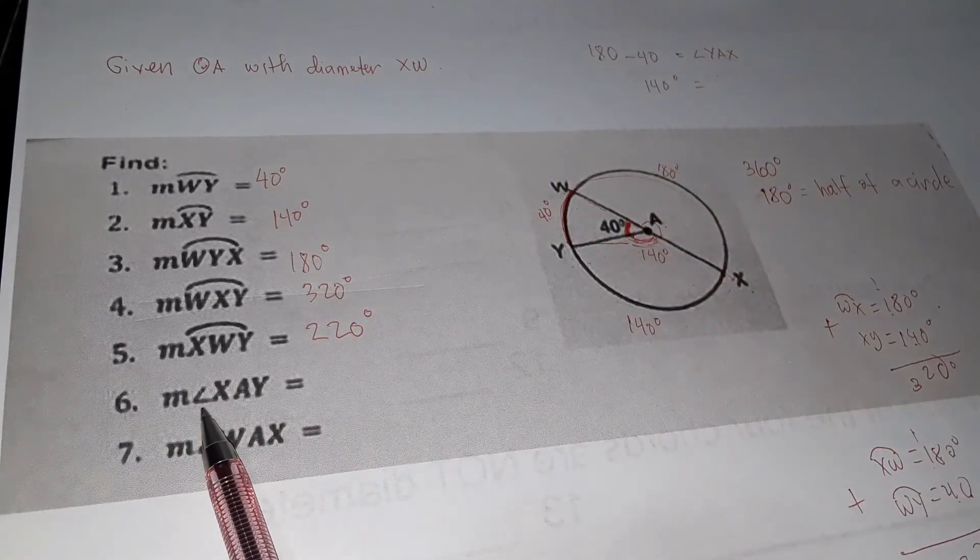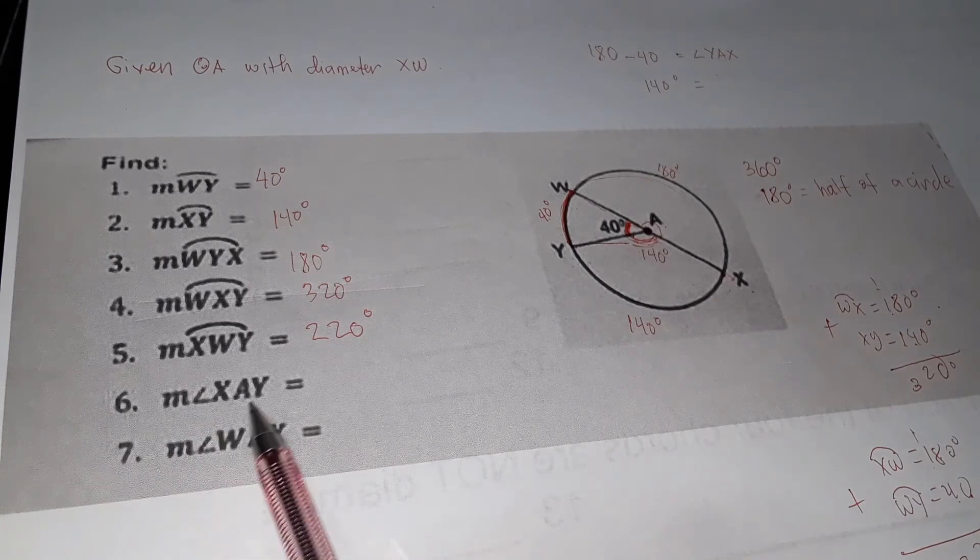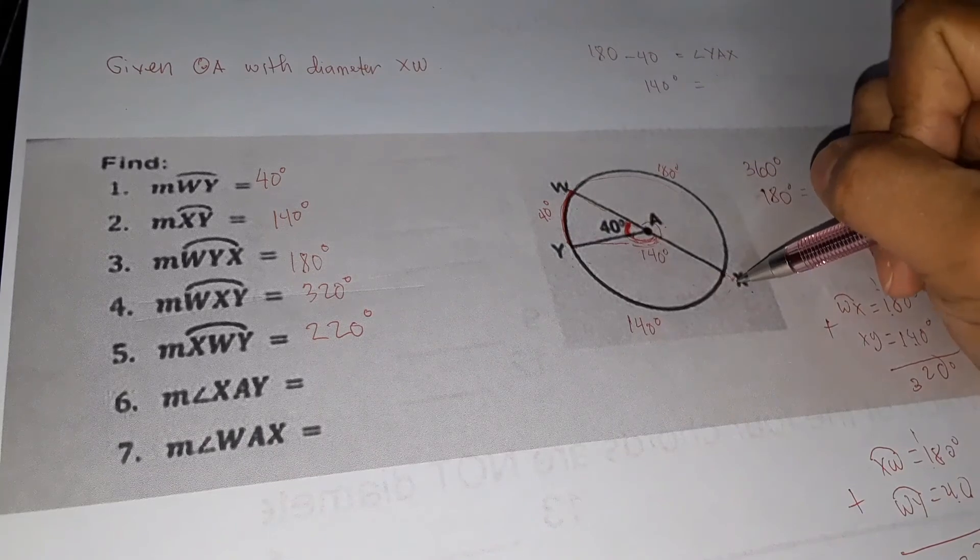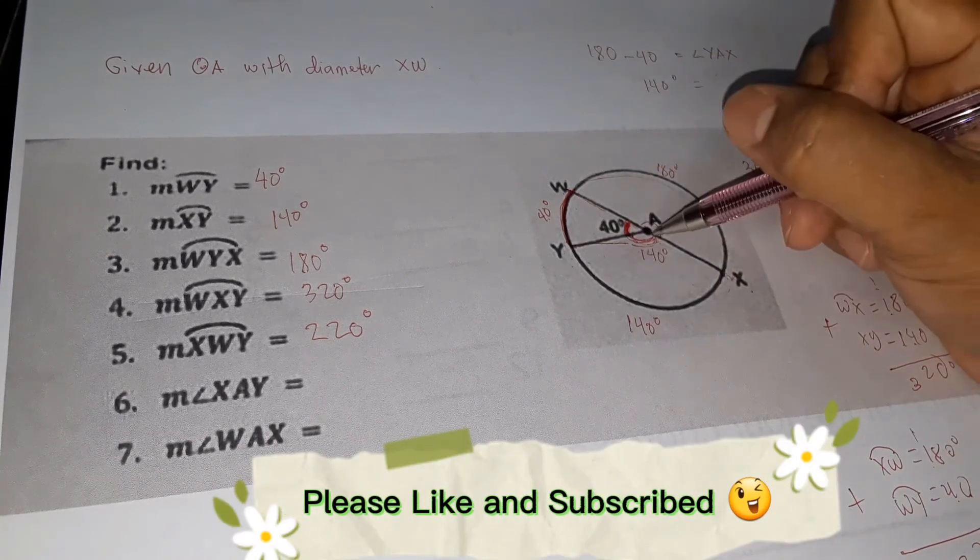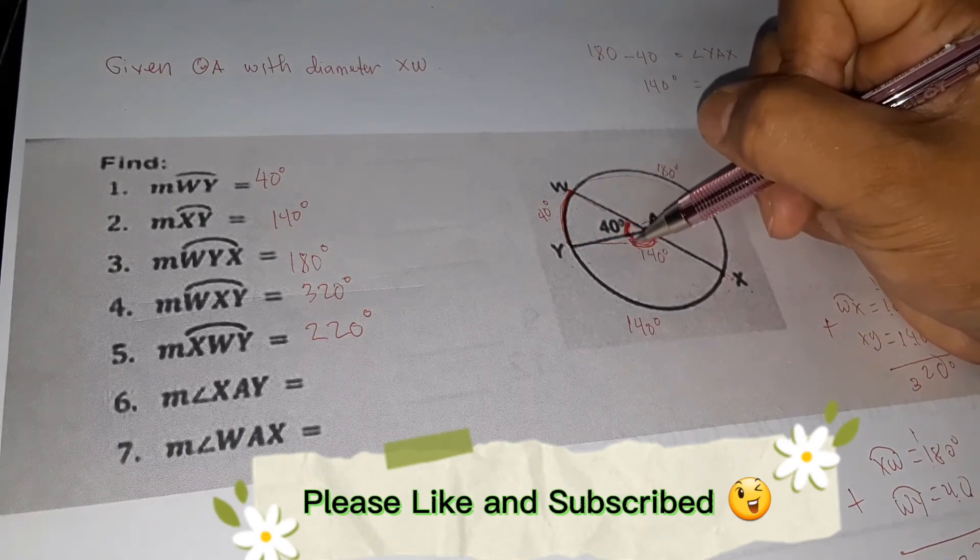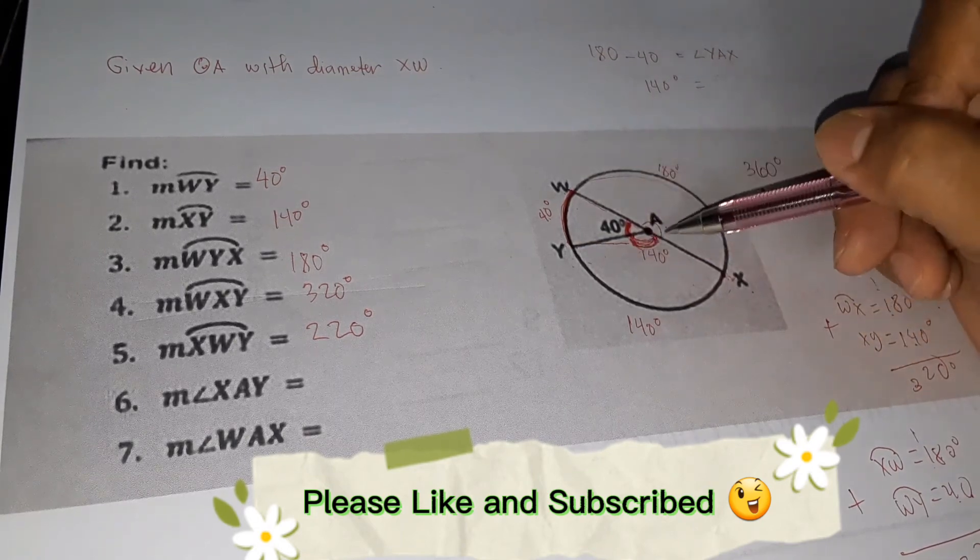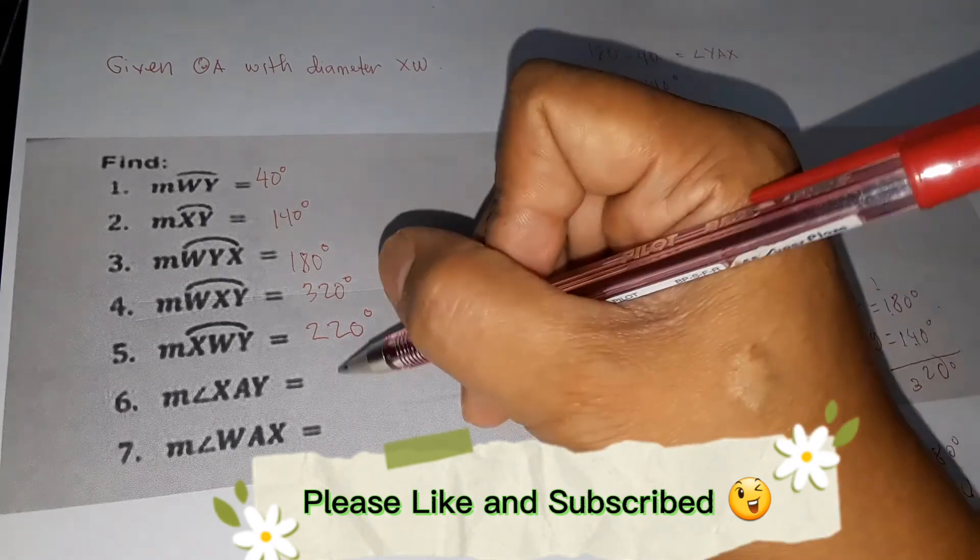Now let's move to angles. The measurement of angle XAY. This is our angle XAY, we're talking about this angle. We already know this because we calculated it earlier. We have 140 degrees.